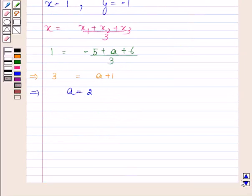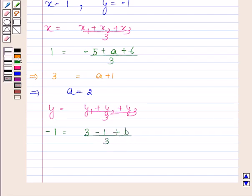Now y coordinate of the centroid is equal to (y1+y2+y3)/3. Here y=-1, y1=3, y2=1, and y3=b divided by 3. This implies -3=2+b and this implies b=-5.